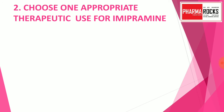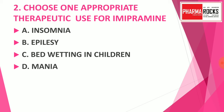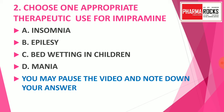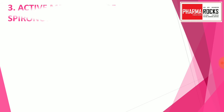Question number 2: Choose one appropriate therapeutic use for imipramine. Option A: insomnia, option B: epilepsy, option C: bed-wetting in children, option D: mania. You may pause the video and note down your correct answer. The correct answer is option C: bed-wetting in children. Bed-wetting in children is a complication, and for that treatment we can use the drug imipramine.